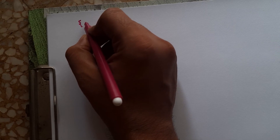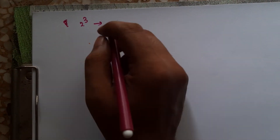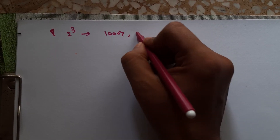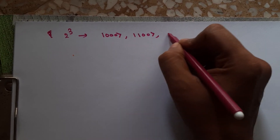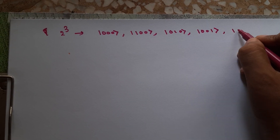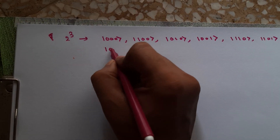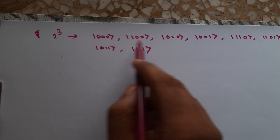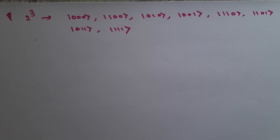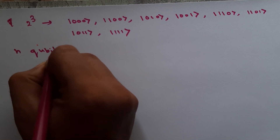For three qubits, there are 2³ = 8 basis states: |000⟩, |100⟩, |010⟩, |001⟩, |110⟩, |101⟩, |011⟩, and |111⟩ — that's 1, 2, 3, 4, 5, 6, 7, 8. These are the basis states for representing a three-qubit system.